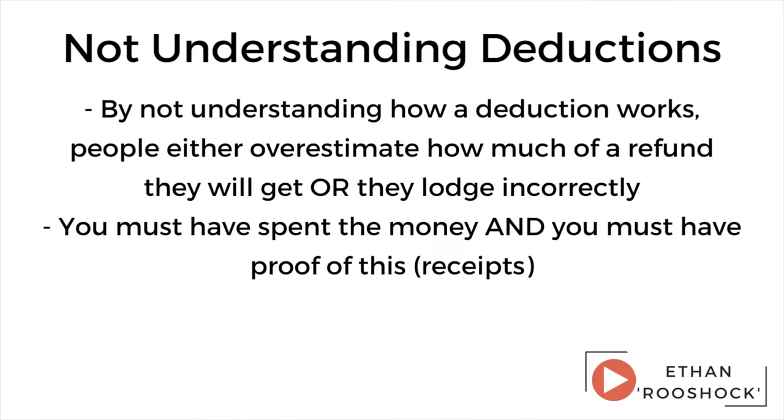The second one is not understanding how deductions work. This impacts people when they come to an accountant because they have an unrealistic expectation of what they're going to be able to claim, or if they're lodging themselves and put things through incorrectly, they can get audited and it all falls apart. Things like car expenses — people come to me wanting to claim wear and tear on their car with no idea how to calculate it. That lack of understanding can mean either it doesn't get included because they have no records, or they include the wrong thing, like fuel amounts when using the cents per kilometre method, or claiming servicing separately on top of that method.